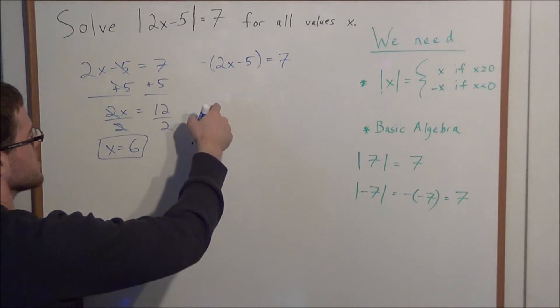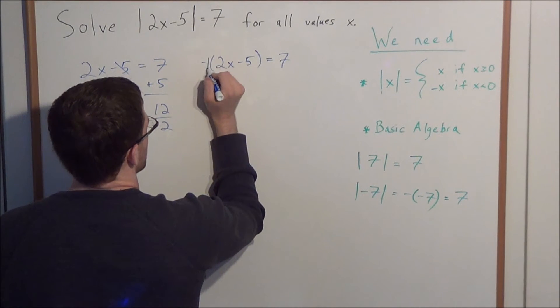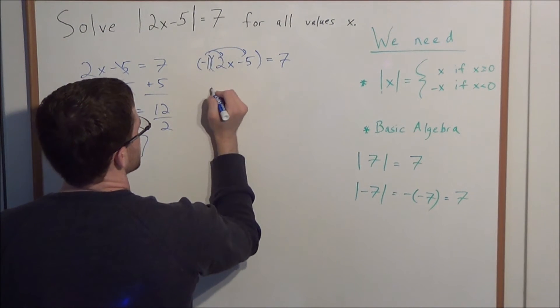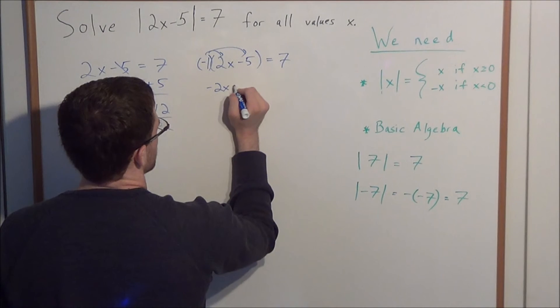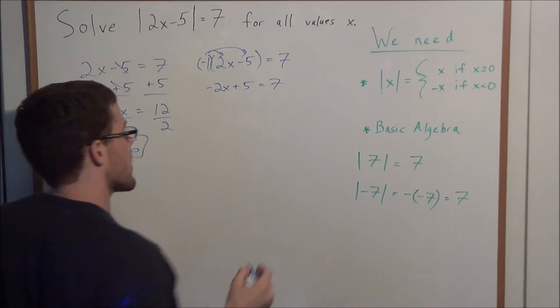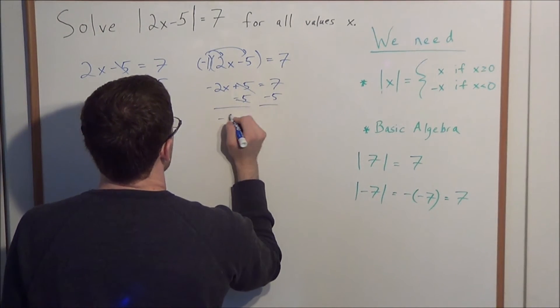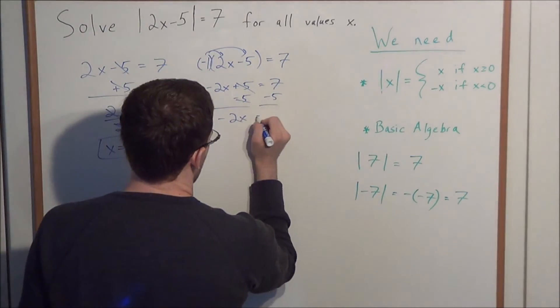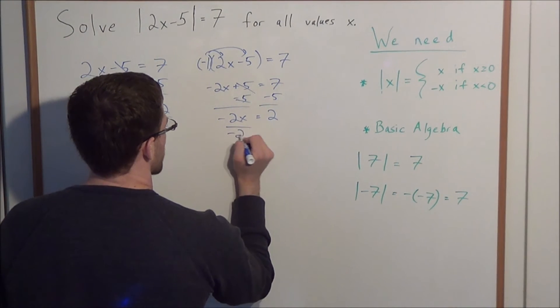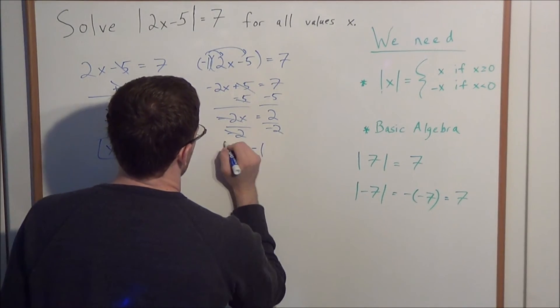So next, what do we need to do? We need to look at this case here. Well, how do we solve for x in this case? Let's look at this negative sign as a negative 1. Now we can distribute. We have negative 1 times 2x is negative 2x. Negative 1 times negative 5 is a positive 5, and this equals positive 7. So now to solve for x, same strategy as before. We'll subtract 5 from both sides. So now we have negative 2x equals 7 minus 5. So negative 2x equals a positive 2. Now, the last step to solve for this value of x, we divide by negative 2, and we have that x is equal to negative 1.